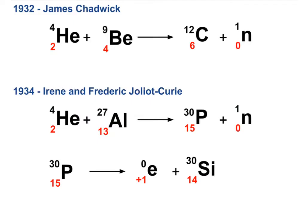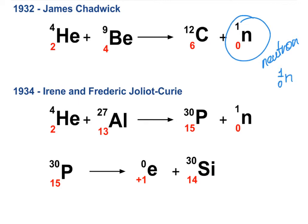Shooting alpha particles into nuclei became very popular, so in 1932 James Chadwick discovered the neutron by smashing an alpha particle into beryllium-9. In this reaction, carbon-12 is formed along with a new subatomic particle — the neutron — which has no charge and a mass of one atomic mass unit. Chadwick was the first to isolate it, observe it, confirm it has no charge, and calculate its mass.